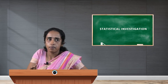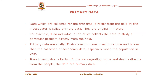Primary data is also called first-hand data. Data which are collected for the first time directly from the field by the investigator is called primary data — they are original in nature. For example, if an individual or office collects data to study a particular problem directly from the field, or if an investigator collects information regarding births and deaths directly from the people, the data are primary data.